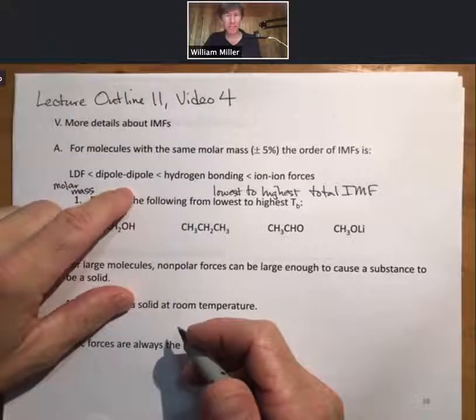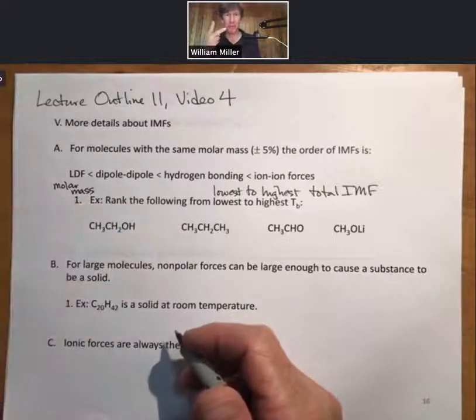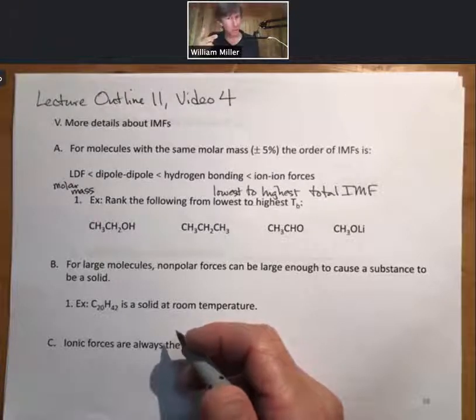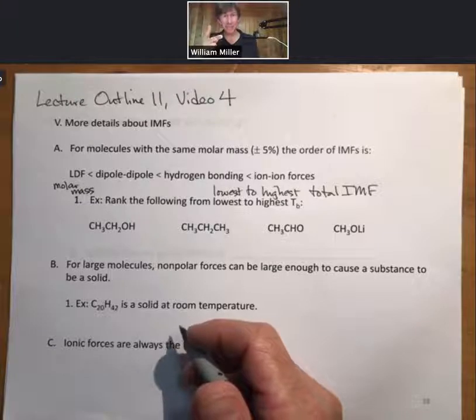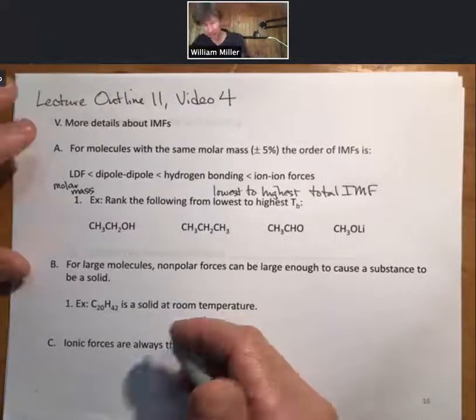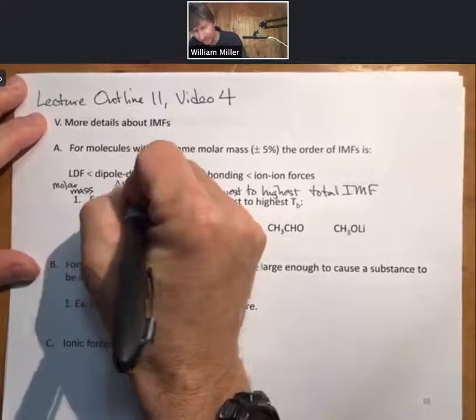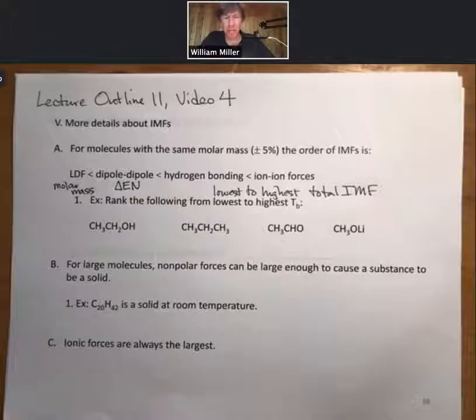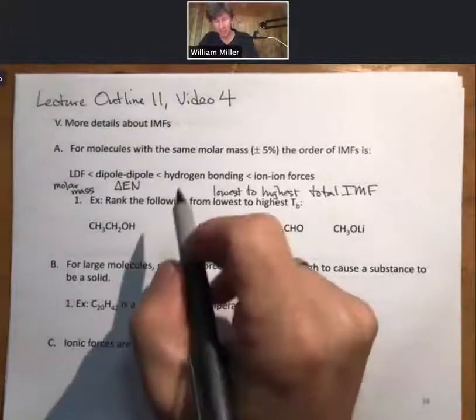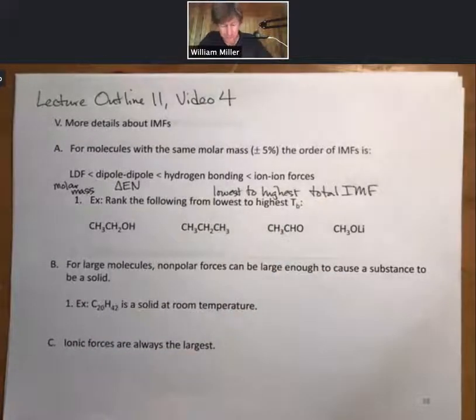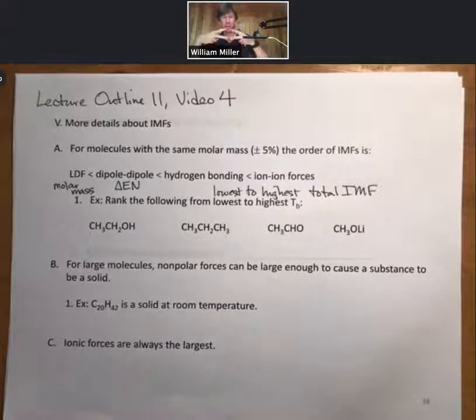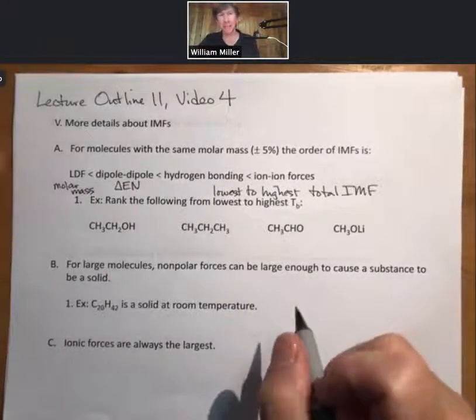For dipole-dipole, if you're looking at two things that are both dipole-dipole, which almost never happens, the way to tell them apart is by delta electronegativity. The larger difference in electronegativity leads to a larger IMF and higher boiling point. For hydrogen bonding, you would look to the total number of hydrogen bonds per molecule.